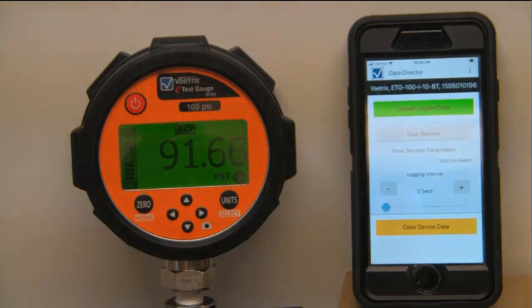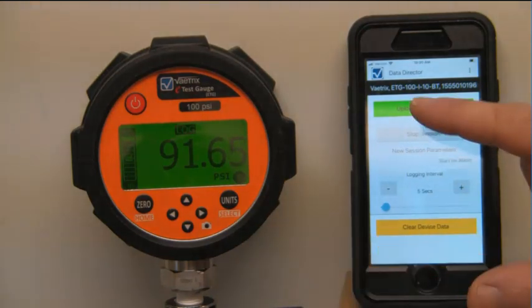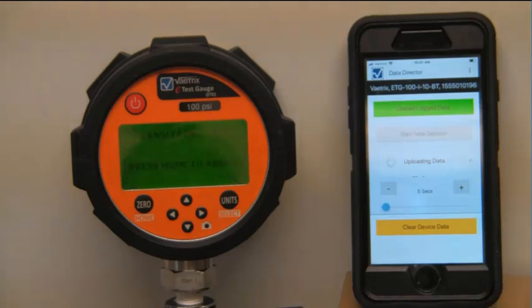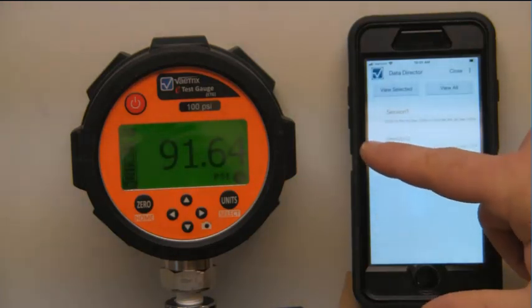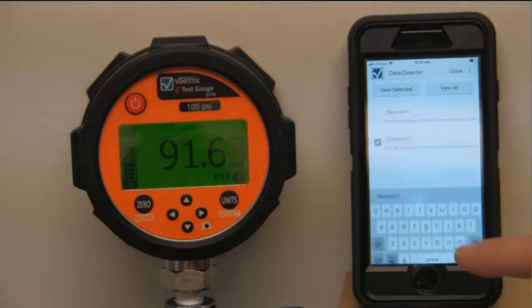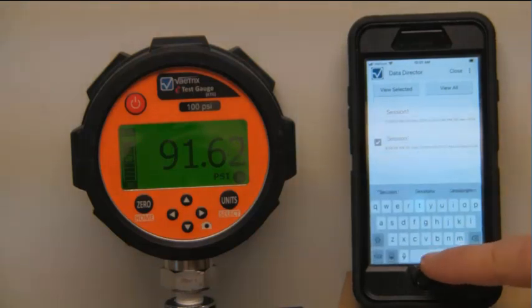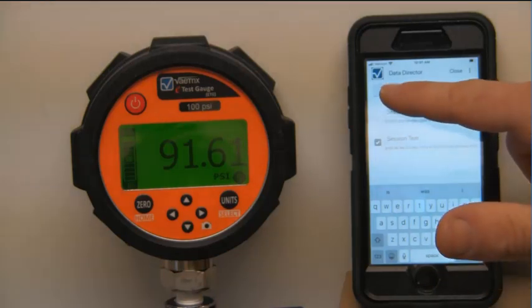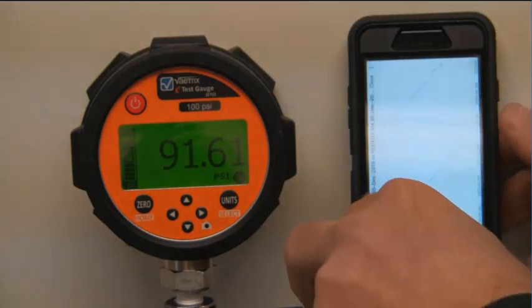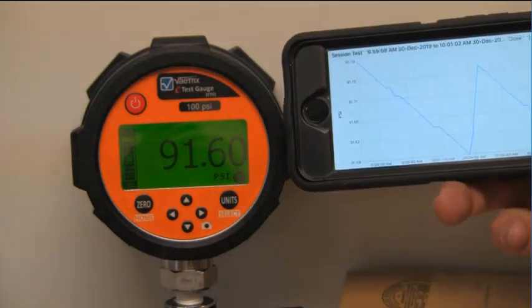So now I am going to upload the data during this whole test. I am going to upload the data. You see it is transferring the data. This is session 2. I can rename it. We will call it session 2 test. We can view the selected. Now we will put it in landscape mode.